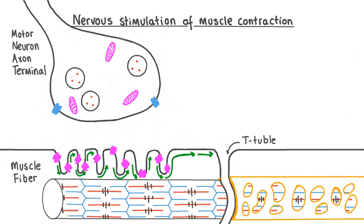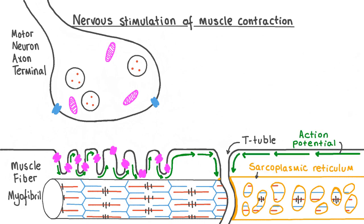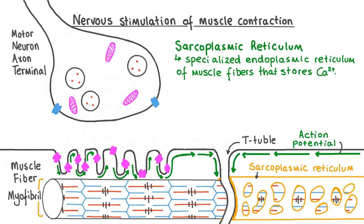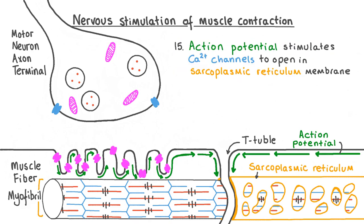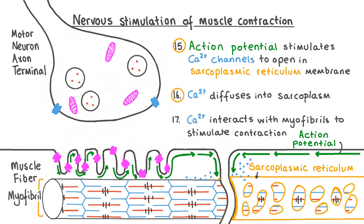T-tubules are indentations of the sarcolemma that allow action potentials to be transported to the sarcoplasmic reticulum, which surrounds organelles called myofibrils and contains stored calcium ions. When stimulated by an action potential, calcium ion channels open in the sarcoplasmic reticulum's membrane and calcium ions diffuse into the sarcoplasm. The calcium ions can then interact with protein filaments within the myofibrils to stimulate muscle contraction.